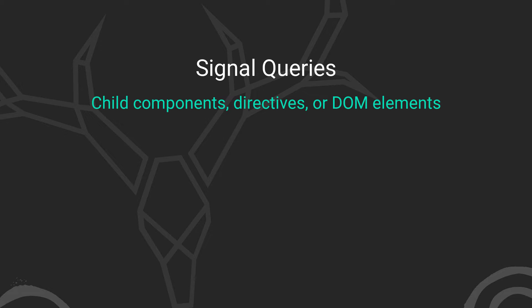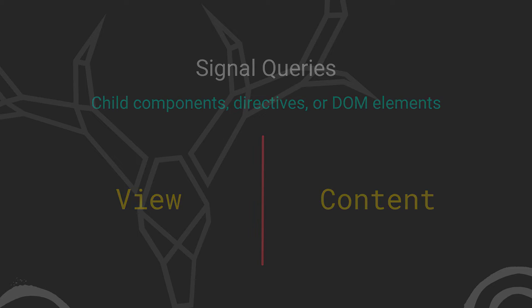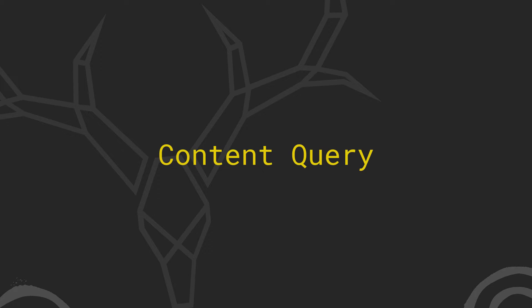If we're searching for something directly within the component template, then we're using the view. To contrast, if we're searching for something that will be inserted within a content slot, we're using content. In this case, since we're dealing with the component view, this function is considered a view query. Anything dealing with the projected content would be considered a content query. We'll see an example of this later on in the video.